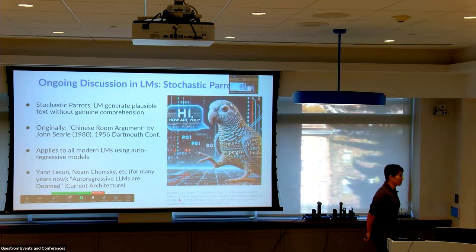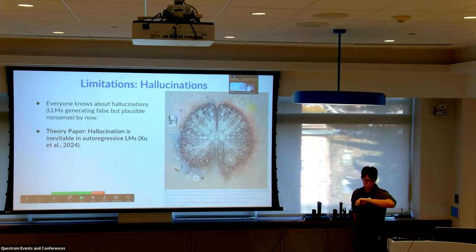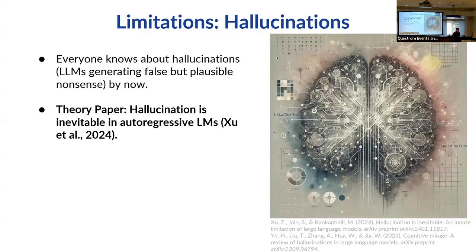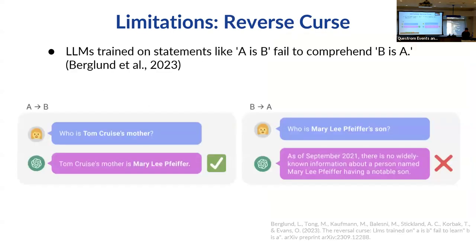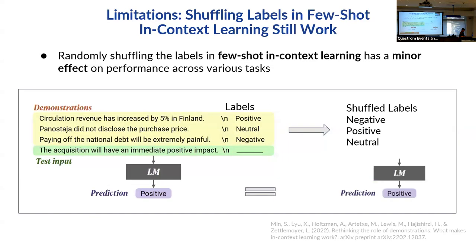There are a lot of arguments about this architecture not being the right one, but nobody knows. I'll quickly go through a bunch of limitations. Everybody knows about hallucination, but there's a paper showing that in autoregressive models — like what ChatGPT is made of — hallucination may be inevitable. There is also the 'reverse curse': models trained on statements like 'A is B' fail to comprehend 'B is A,' while humans have no issue with this.